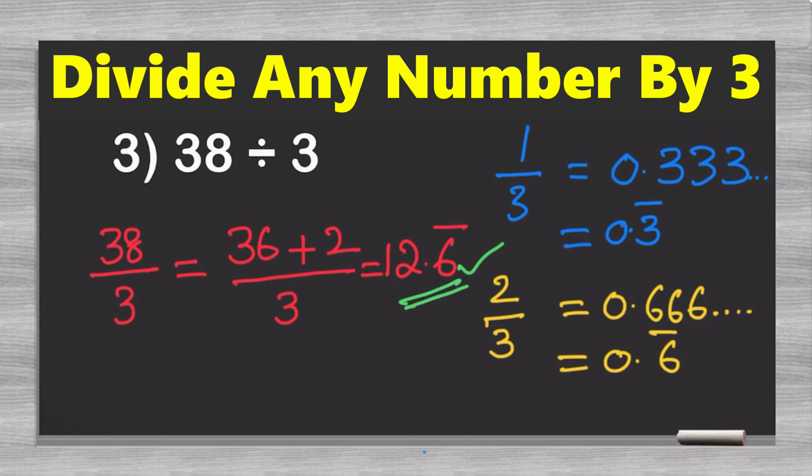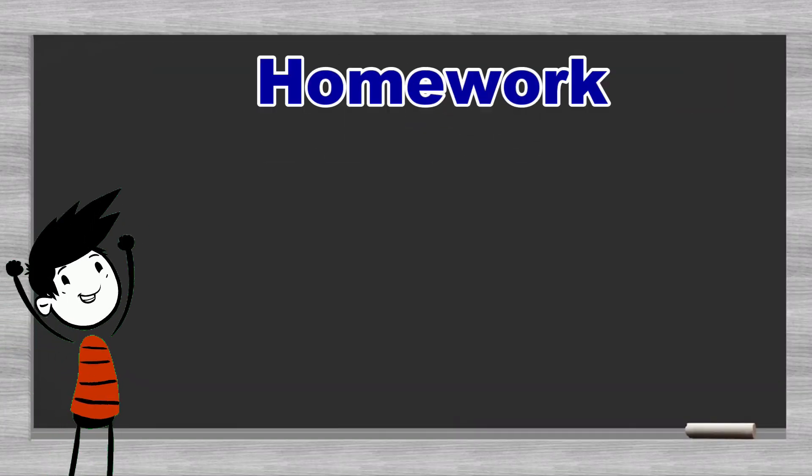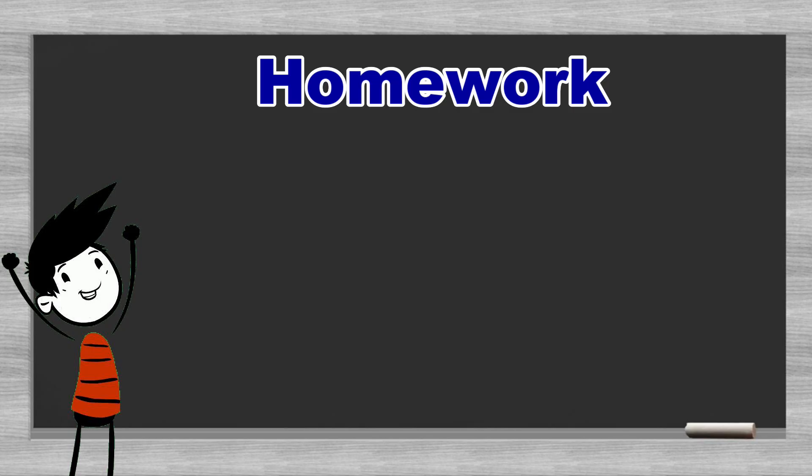Now that you fully understand how to easily divide any number by 3 in just 5 seconds or less, it's time for some homework. Calculate the results of 16 divided by 3, 31 divided by 3, and 44 divided by 3. Make sure to comment down your answers in the comment section below. And, for your convenience, the correct answers to each one of these questions will be in the description below.